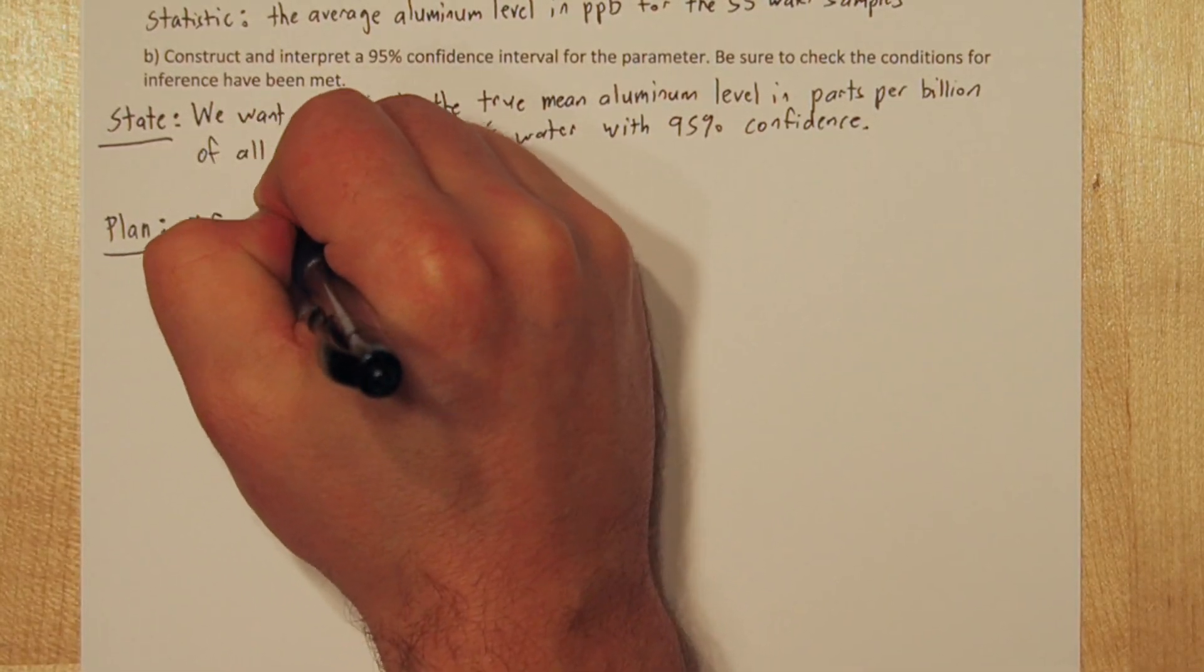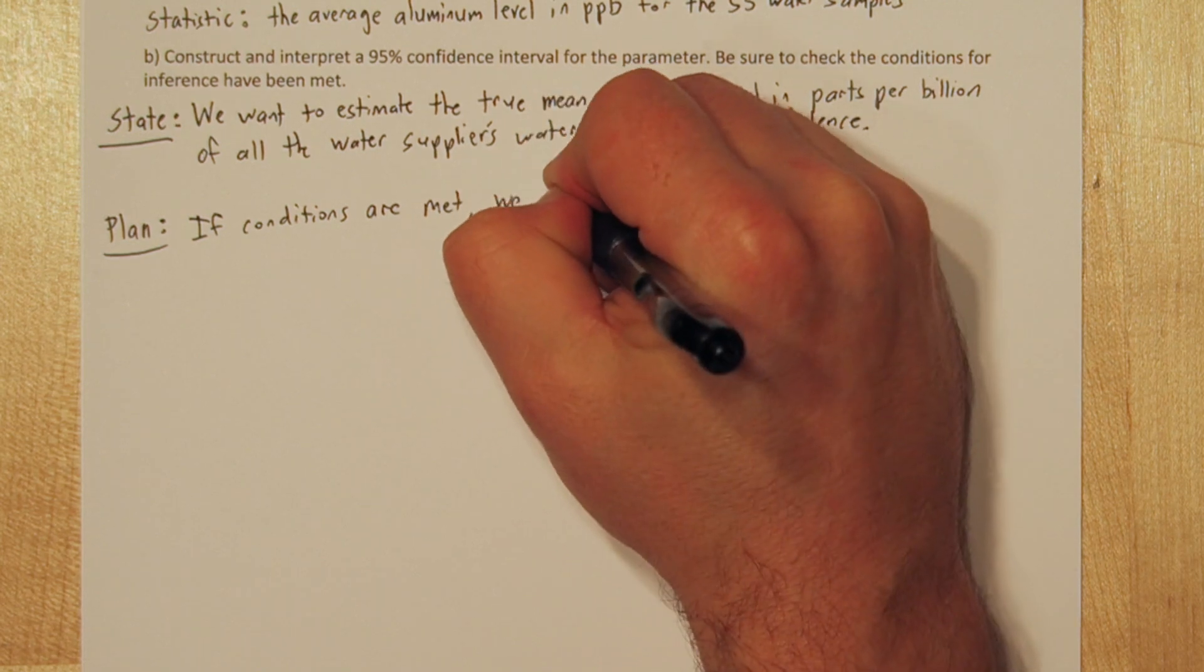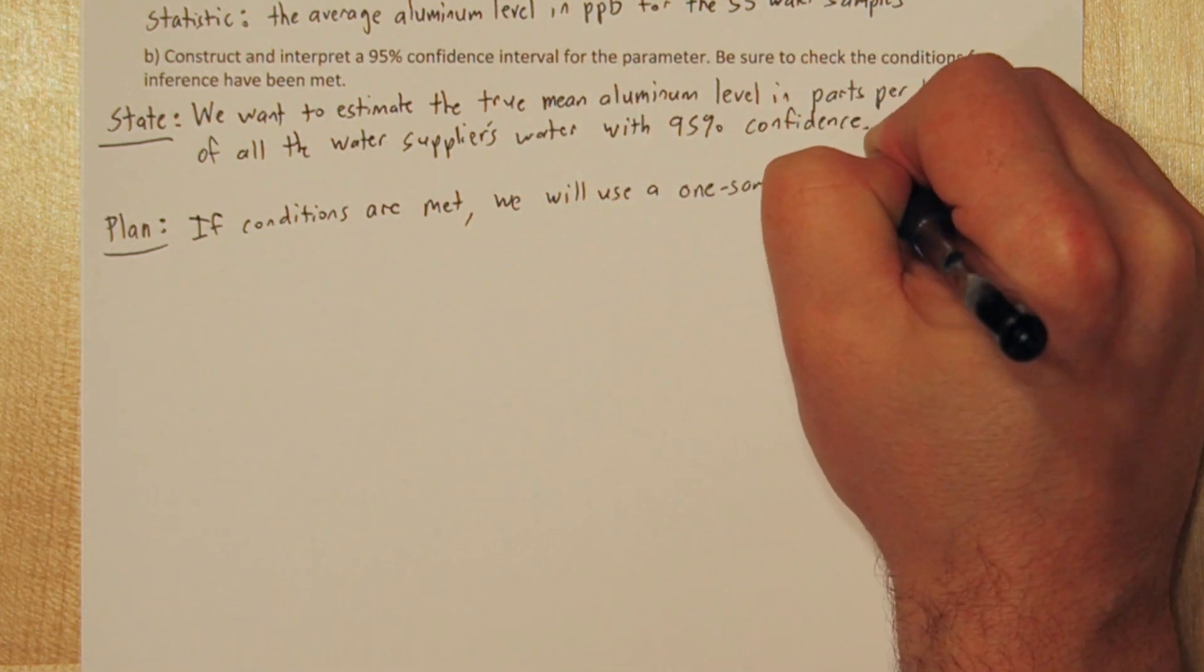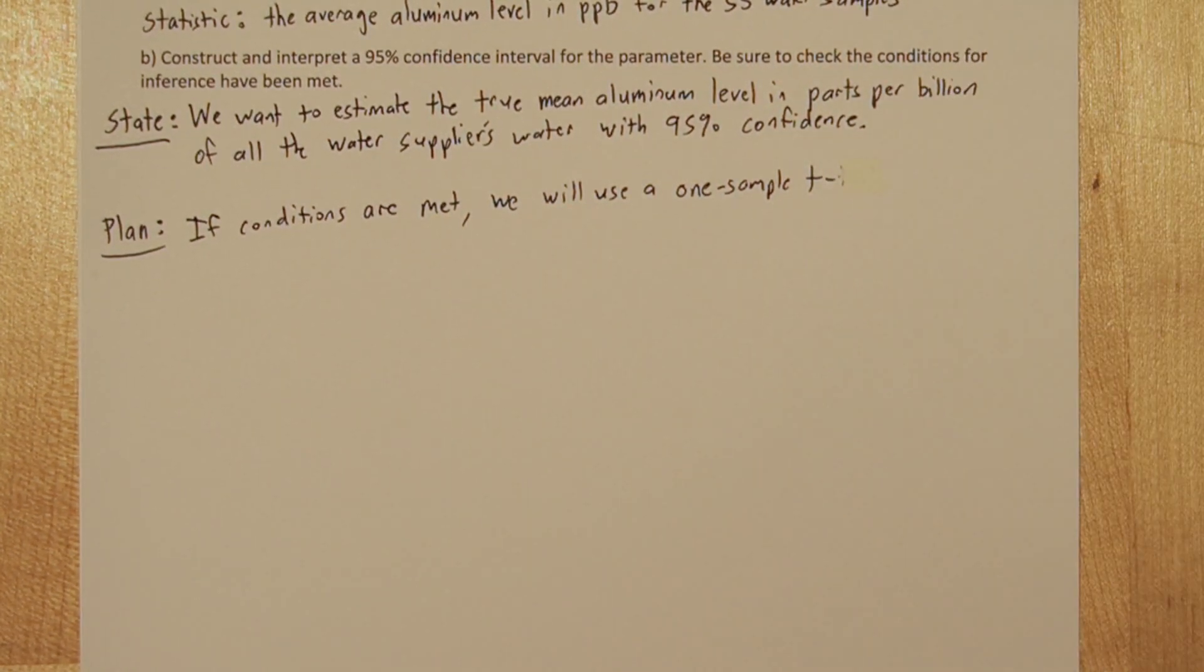In the plan step, we need to state our inference method and our conditions. So if conditions are met, we will use a one sample t-interval. That's our inference method.